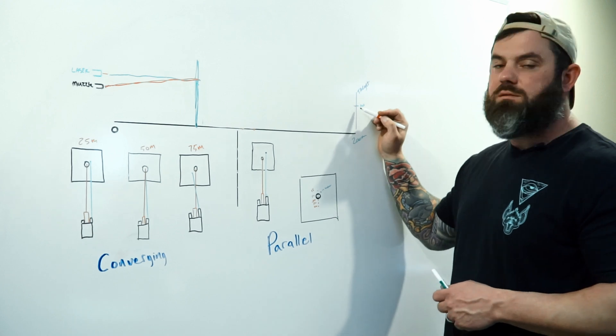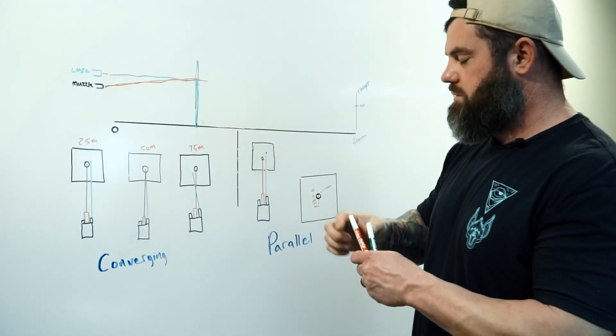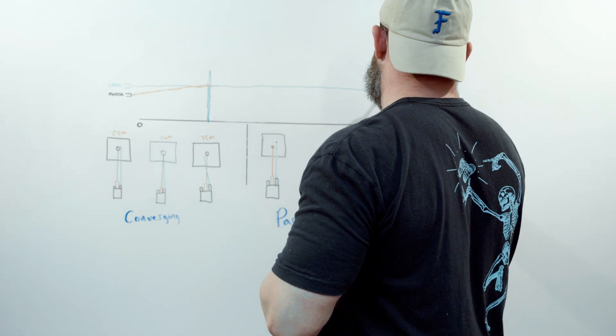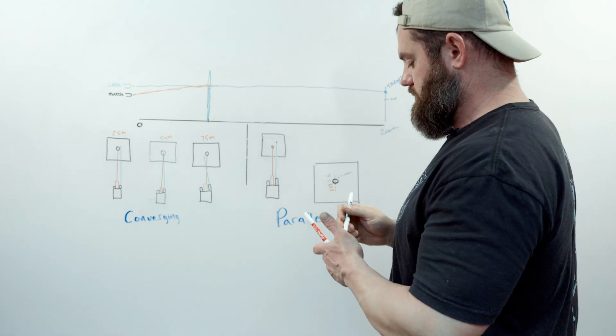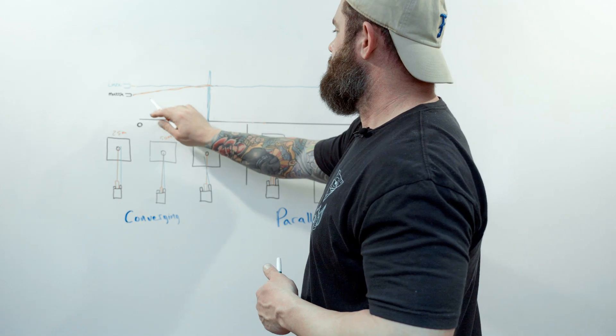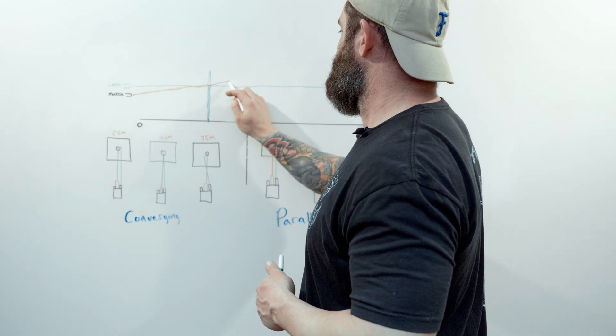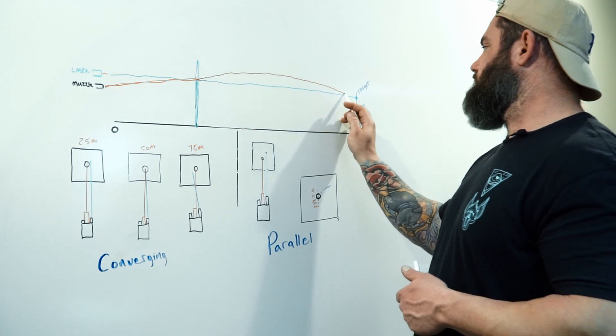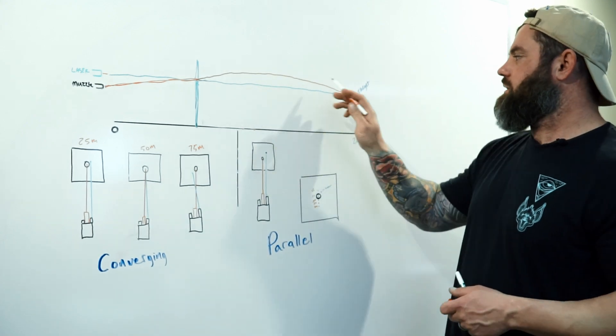Now, if we want to make impacts out here at 200 meters, the laser, as we discussed, is going to travel in a straight line to infinity. Let's say we're holding at the same point on this target right there. Bullets do not travel in straight lines. For the purposes of this diagram, the bullet is going to travel higher than the axis of the laser or the path of the laser, and then it's going to fall somewhere on this target.